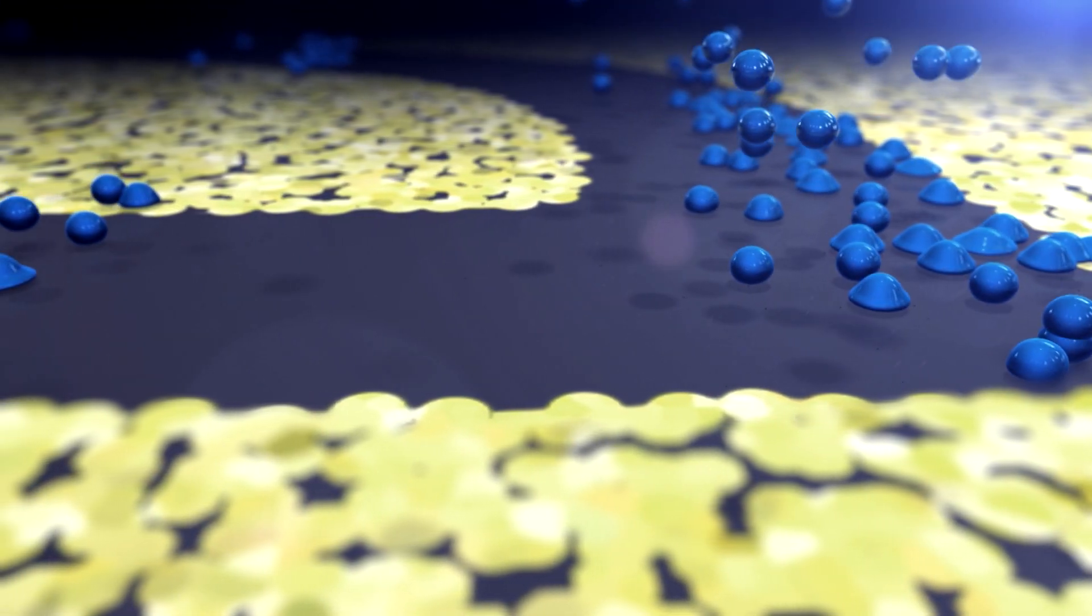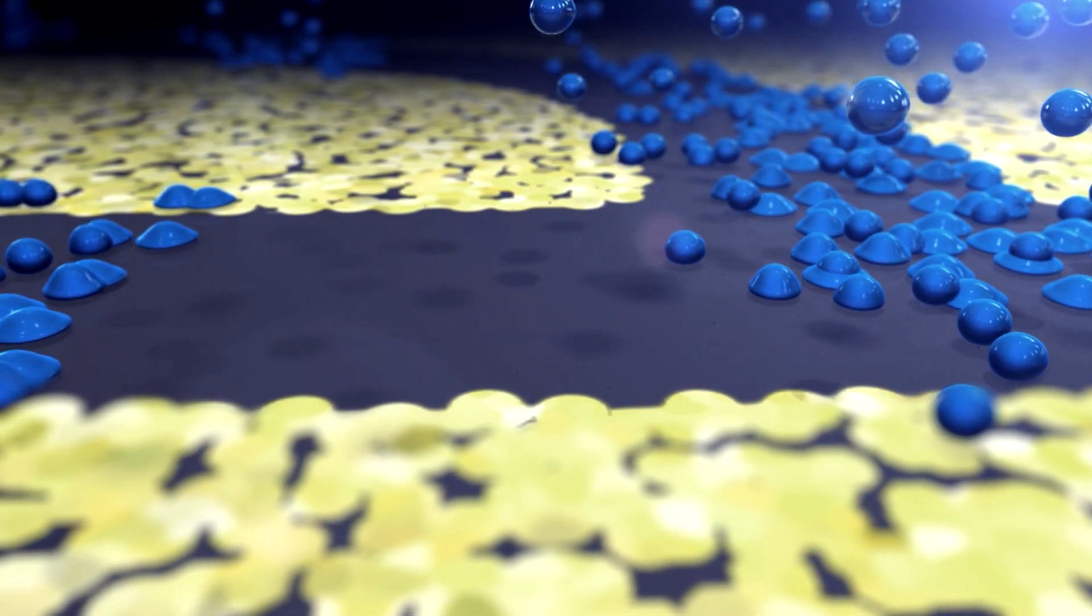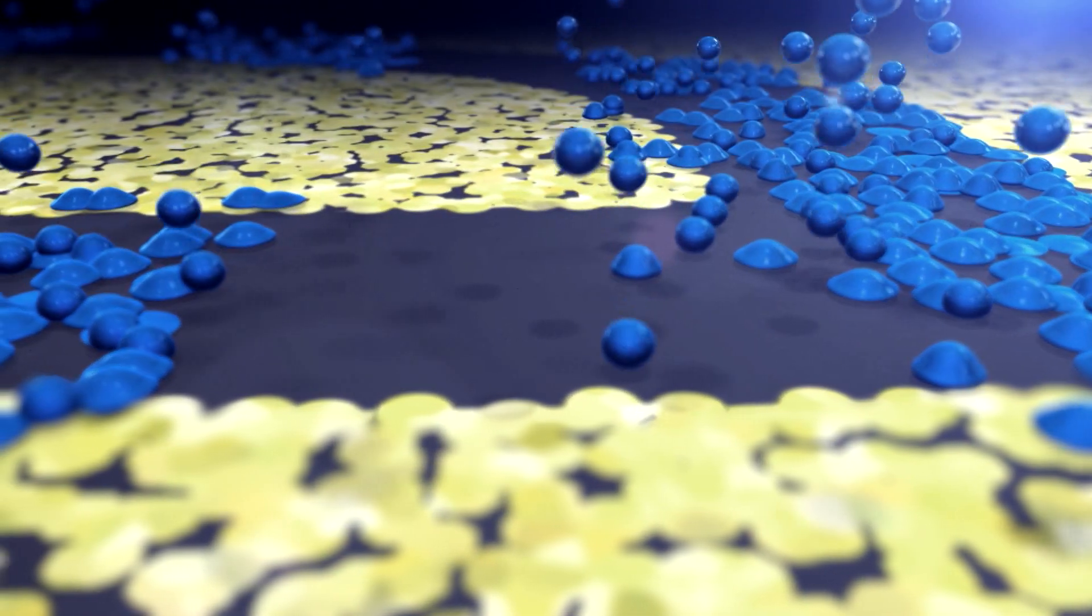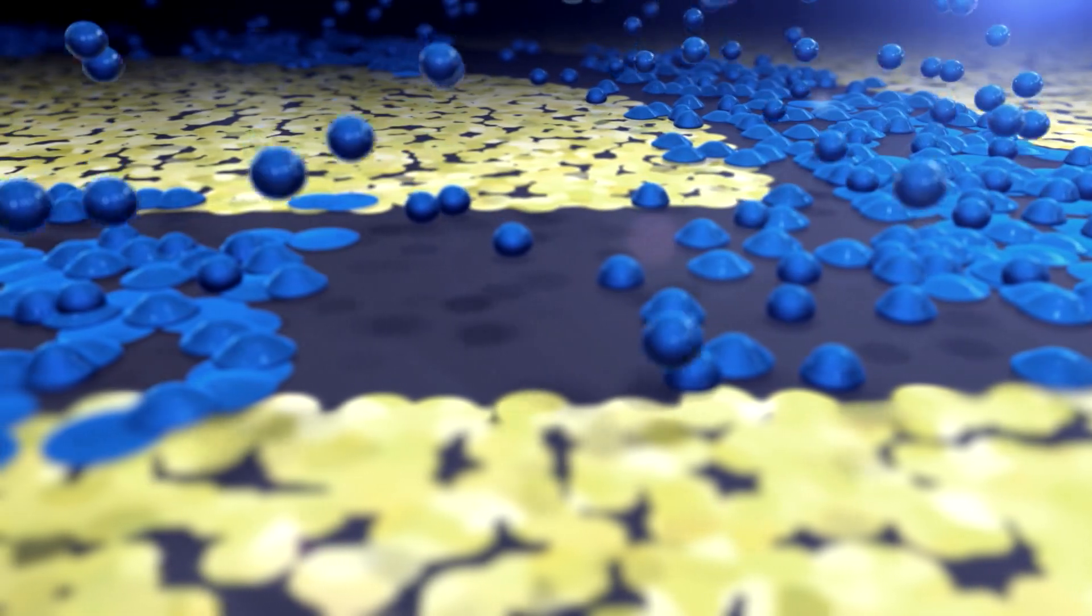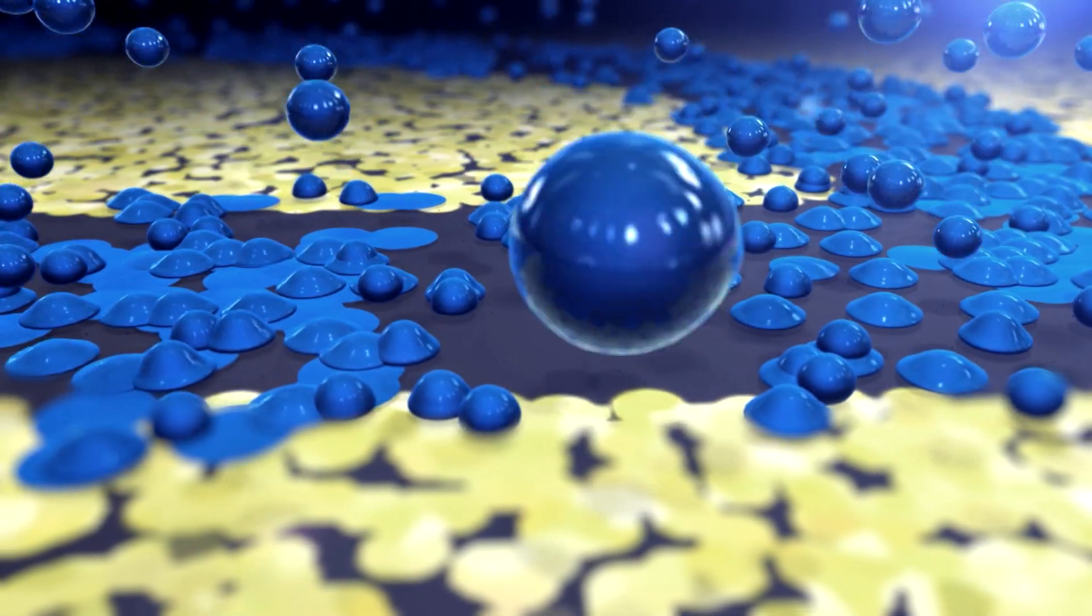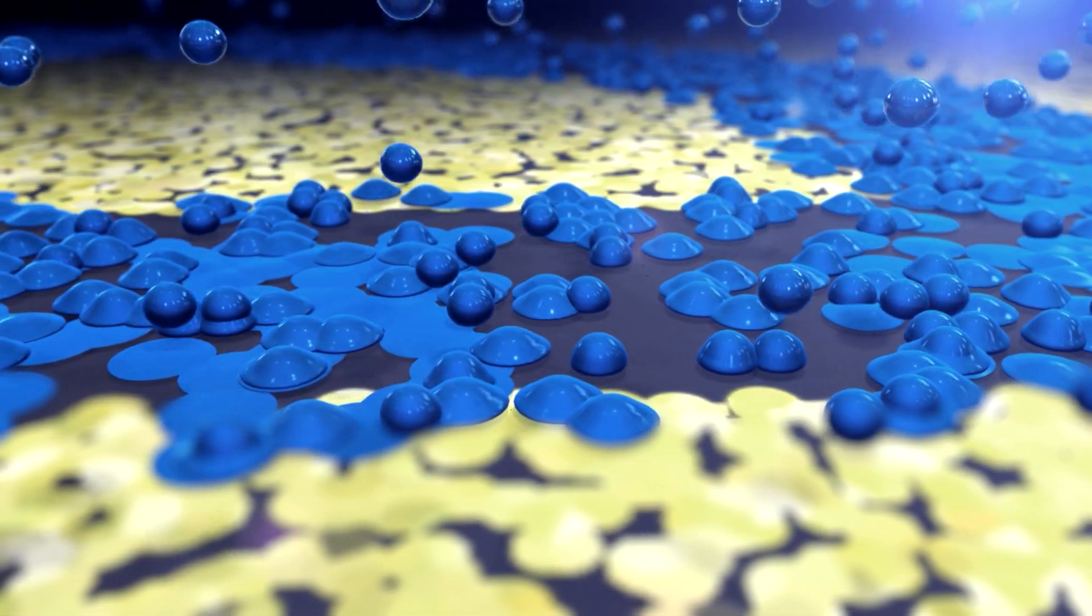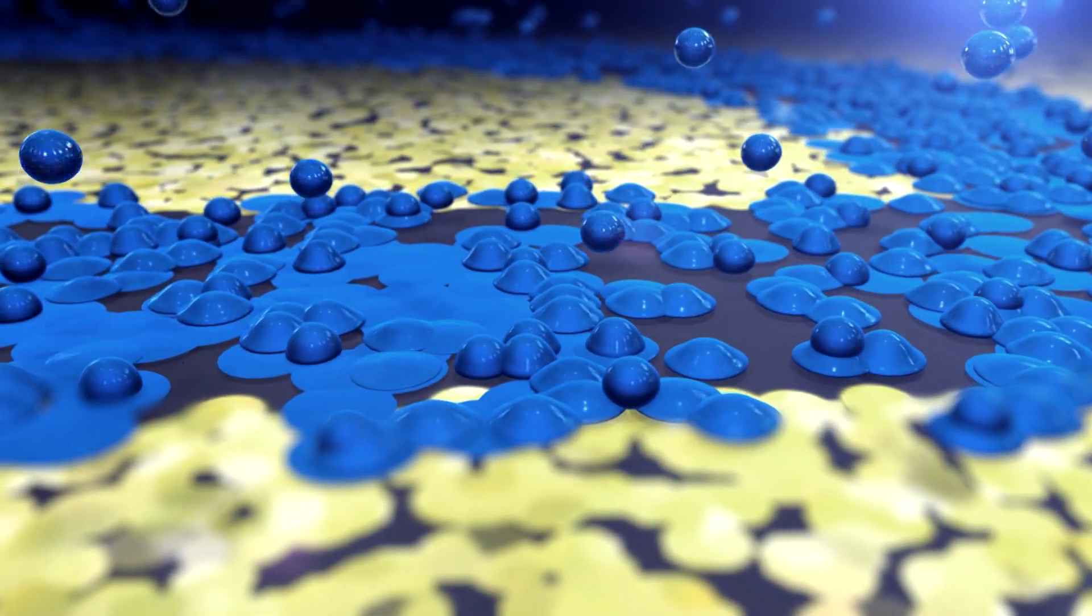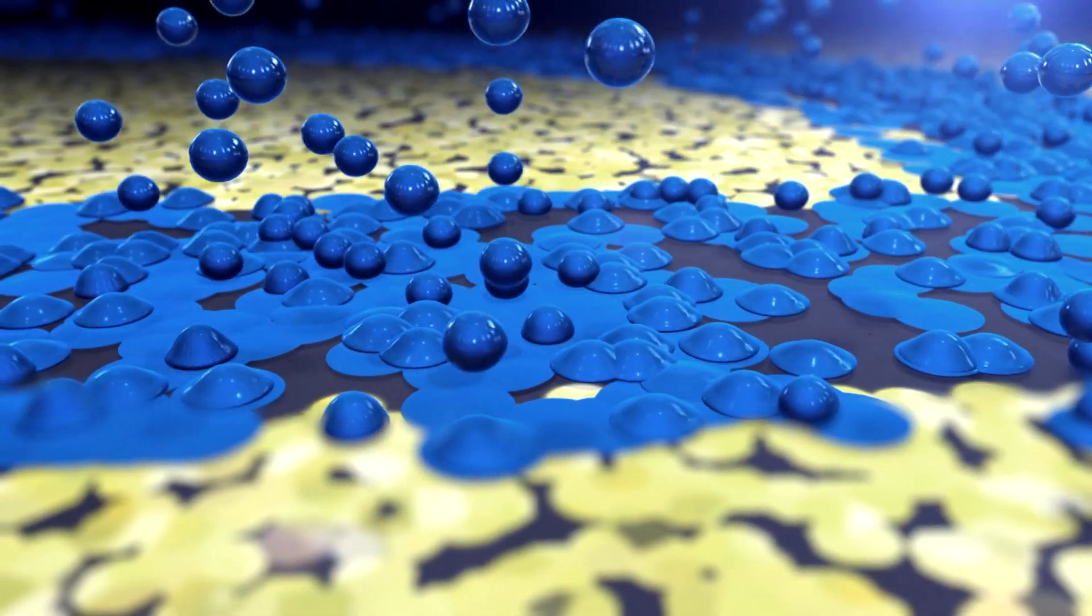As each droplet lands on the heated blanket, it begins to spread and lose its water, becoming thinner as it does so. When all of the water has been evaporated, the ink becomes an ultra-thin dry polymeric film.